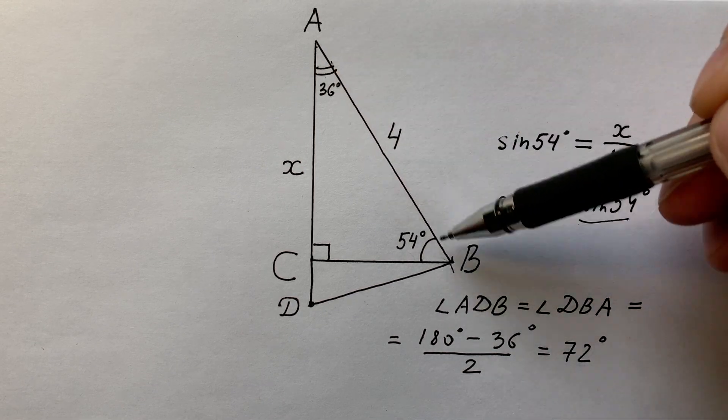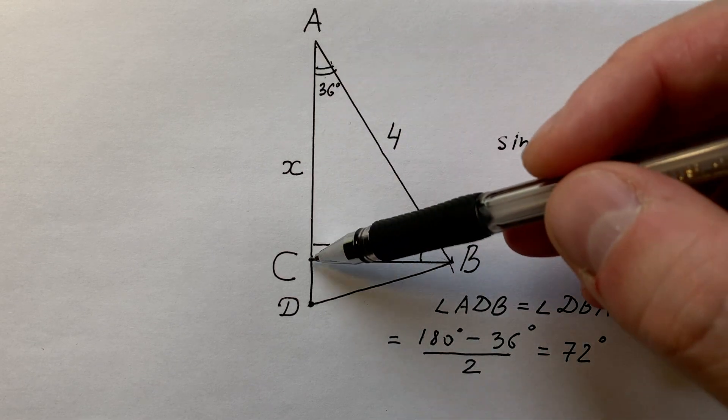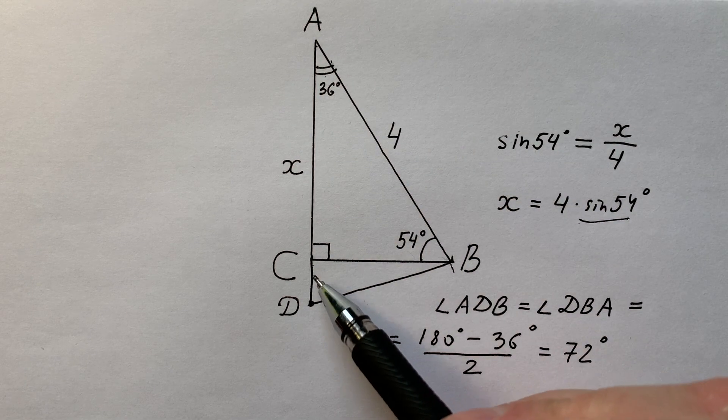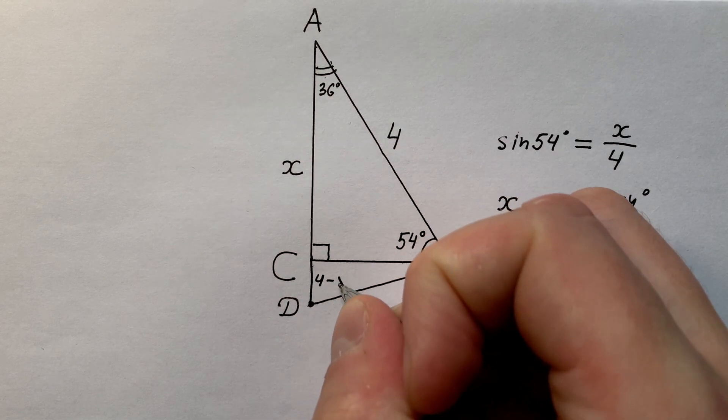Now if AB equals 4 and AC equals x, then CD equals 4 minus x.